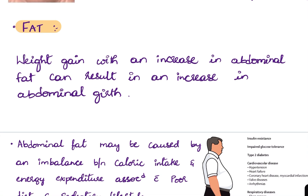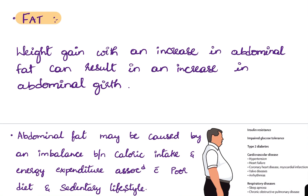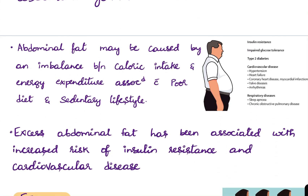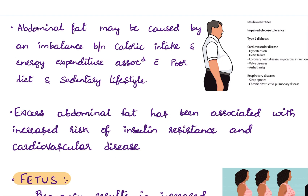The next F is fat. Weight gain with an increase in abdominal fat can result in an increase in abdominal girth. Abdominal fat may be caused by an imbalance between caloric intake and energy expenditure — consuming more calories and spending less energy — which is associated with a poor diet and sedentary lifestyle.